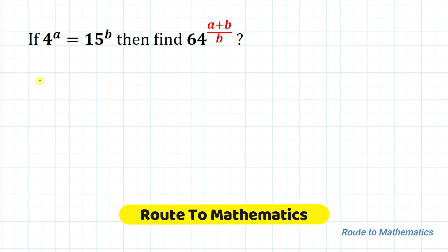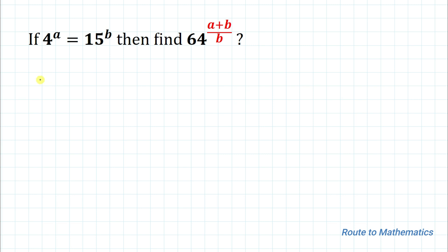Hello everyone, welcome to Root 2 Mathematics. In this video we are going to solve an interesting exponential equation. We have: if 4 to the power a equals 15 to the power b, then find the value of 64 to the power (a plus b) divided by b. Please do subscribe to my channel and click the bell icon for more such videos.